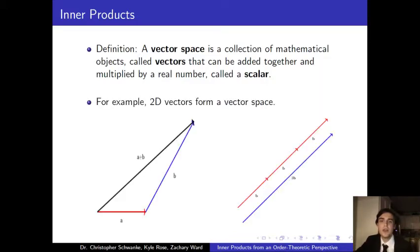As an example, 2D vectors can form a vector space, as seen in the picture here. We can add two vectors together by connecting the starting point of one vector to the endpoint of the other. And we can scale and multiply them by scaling up or down the vector and reversing the direction when multiplying by a negative number.